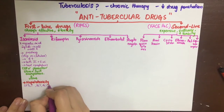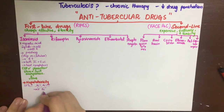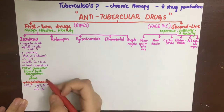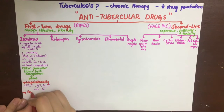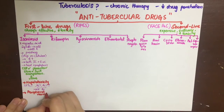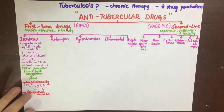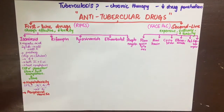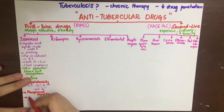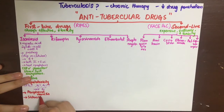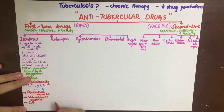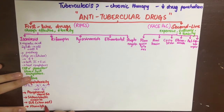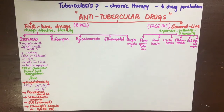Isoniazid's side effects include hepatotoxicity, because it is metabolized in the liver and used on a chronic basis. It also causes raised LFTs (AST and ALT). Since AST and ALT require pyridoxine (vitamin B6) for their activity, they deplete vitamin B6, leading to peripheral neuritis. Other side effects include sideroblastic anemia and SLE — the latter mostly associated with slow acetylators.